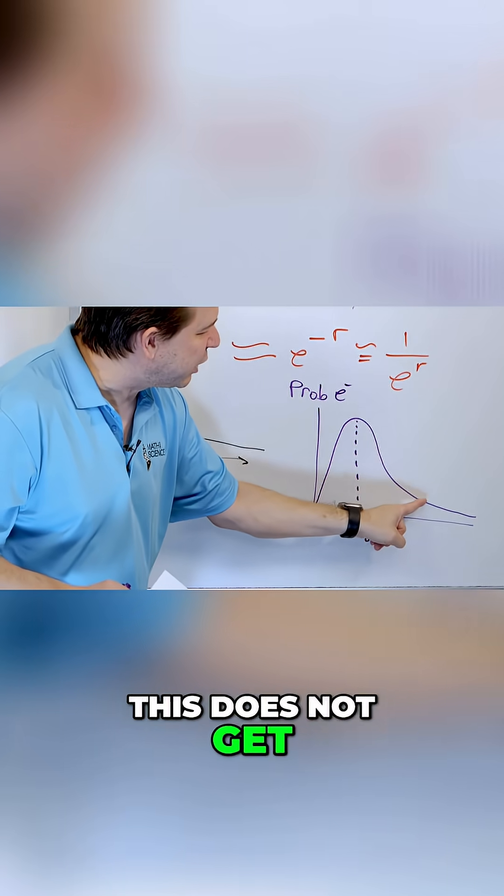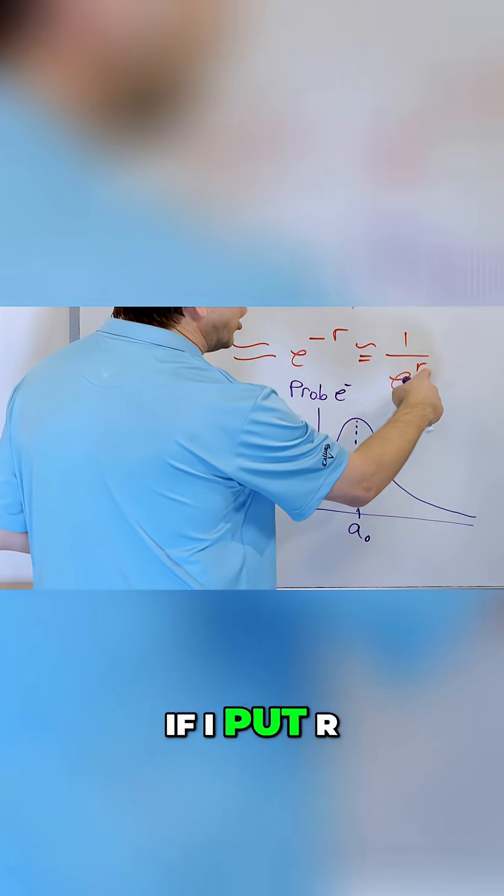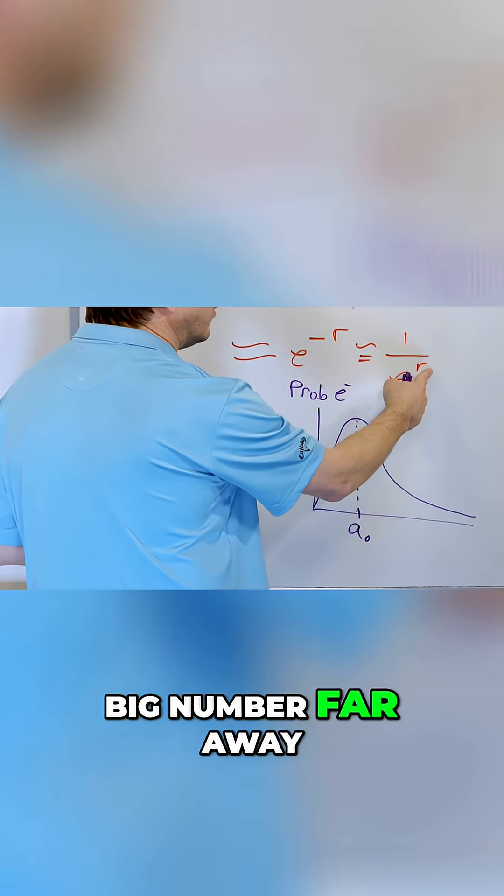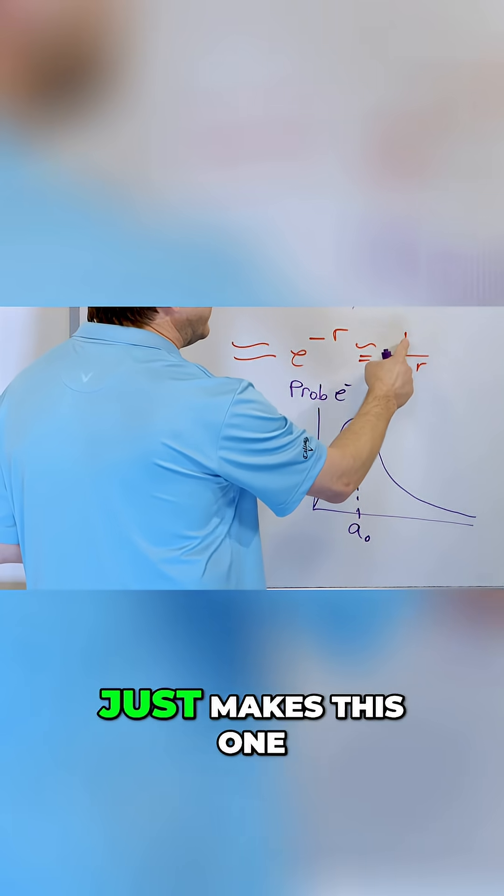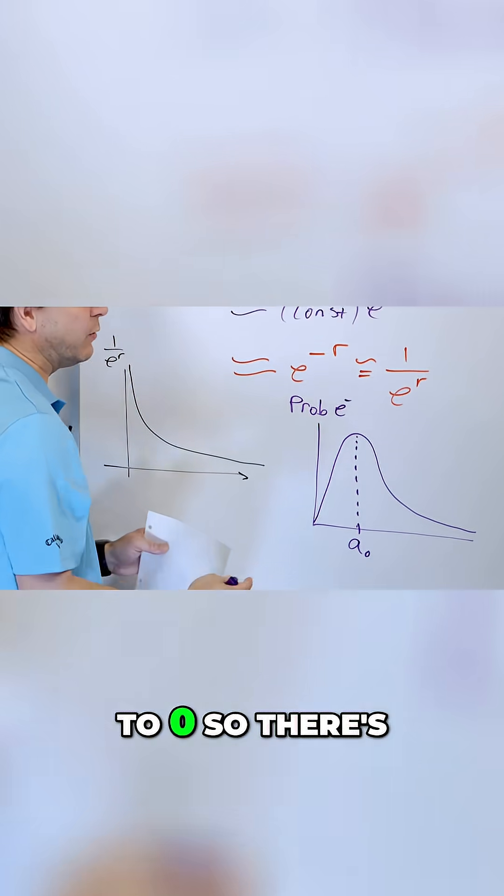Because this does not actually go to zero. If you look at this, e to the -r, if I put r as a really big number far away from the nucleus, that just makes this one over a big number. It makes the probability really small, but it never gets to zero.